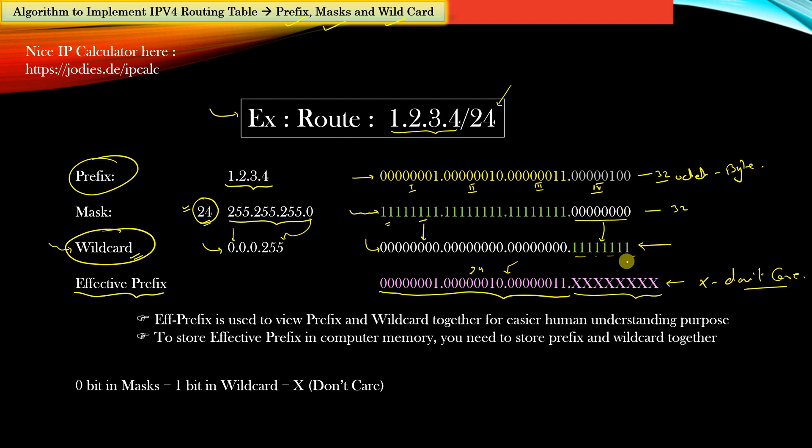In the wildcard at those bit positions where you have 1, those bit positions are don't care. And in the mask those bit positions where you have 0, those bit positions are don't care. So you have don't care both in mask as well as wildcard. The only difference is that in the mask don't care is represented by bit 0 whereas in wildcard it's bit 1 which represents don't care. In effective prefix the don't care is represented by symbol X.